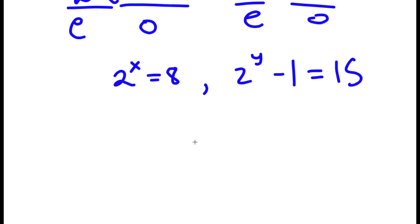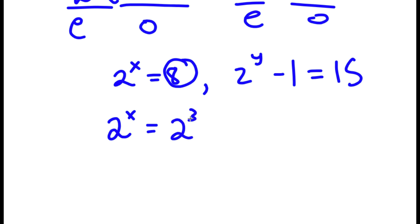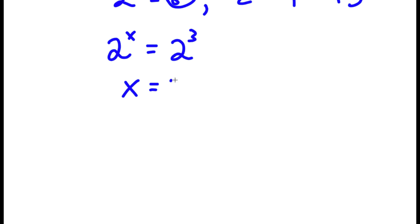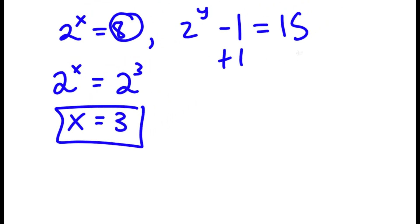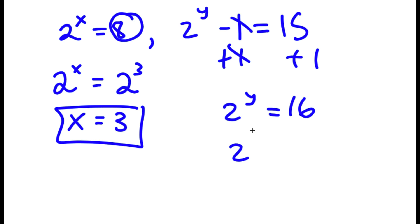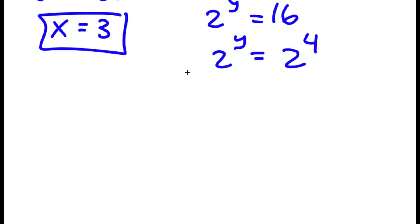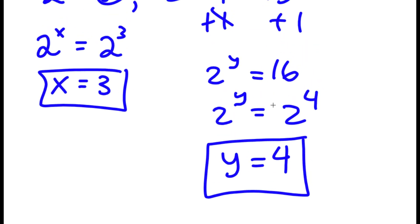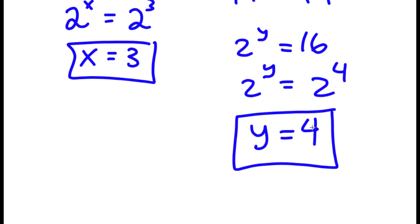Solving 2 to the power of x equals 8: since 8 is 2 to the power of 3, we get x equals 3. For 2 to the power of y minus 1 equals 15, adding 1 to both sides gives 2 to the power of y equals 16, which is 2 to the power of 4, so y equals 4. Therefore, x equals 3 and y equals 4.